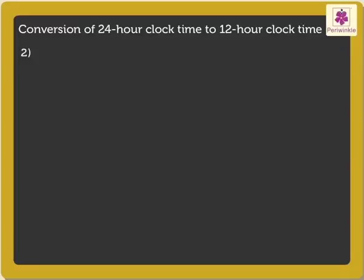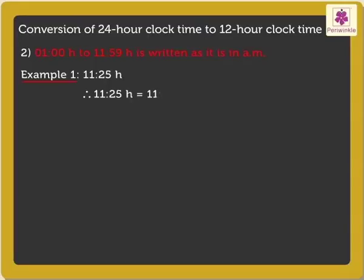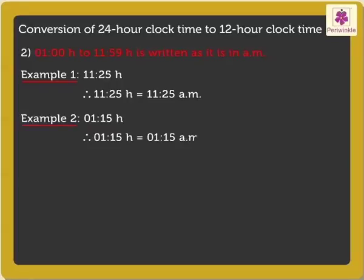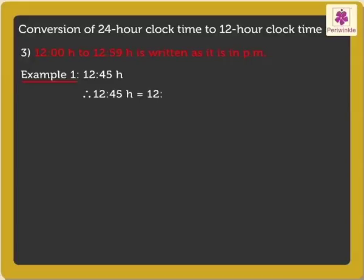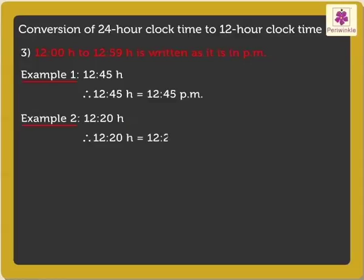The time from 0100 hours to 1159 hours is written as it is in AM. For example, 1125 hours is equal to 11:25 AM, and 0115 hours is equal to 1:15 AM. The time from 1200 hours to 1259 hours is written as it is in PM. For example, 1245 hours is written as 12:45 PM, and 1220 hours is equal to 12:20 PM.